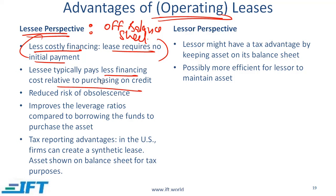You might say that instead of buying the asset you could simply borrow money, in which case you do not need to make that upfront payment. But the advantage of leasing is that typically the lease rate tends to be lower than the interest rate. Why? Because whatever asset you are leasing is collateral. If you don't make your payment, the lessor can just take the asset back, so often with leases you can get a lower rate relative to borrowing.